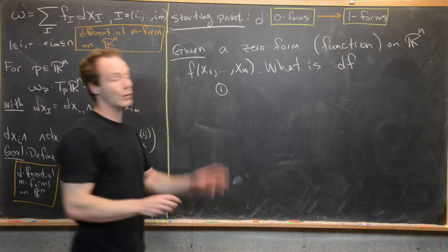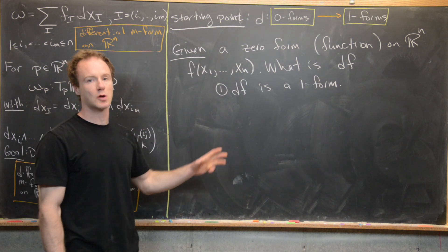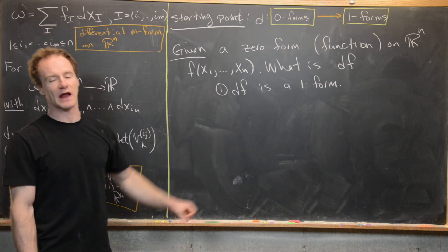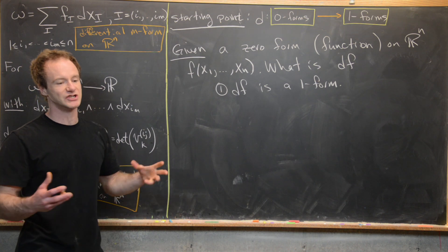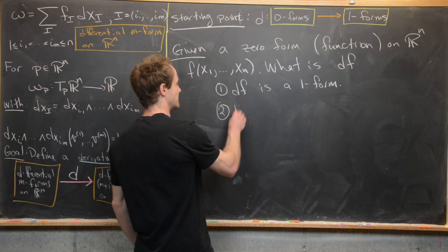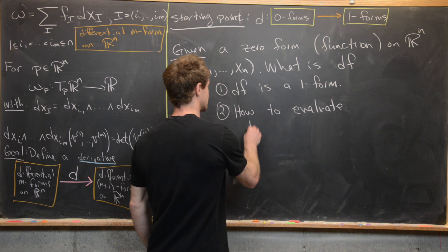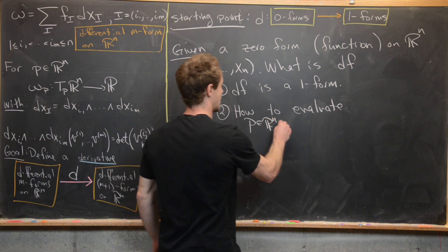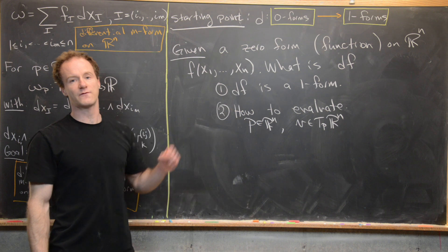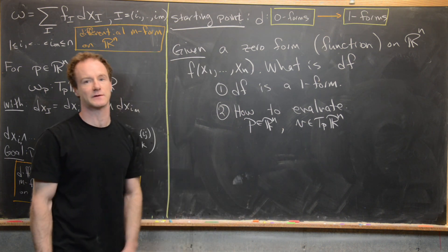First, dF needs to be a 1-form, since our goal is to create a 1-form out of the 0-form in a nice geometric way. For evaluation, a 1-form has a two-stage evaluation: you first plug in a point P from Rn, and then a single vector v from T_P(Rn). We need to think of some nice geometric thing we can do given a point in Rn, a vector in Rn, and this function.